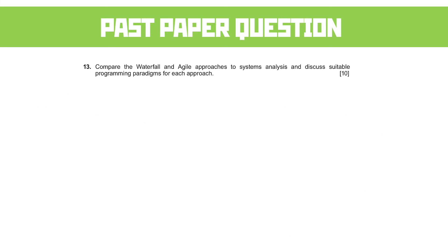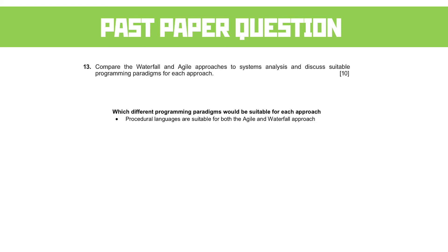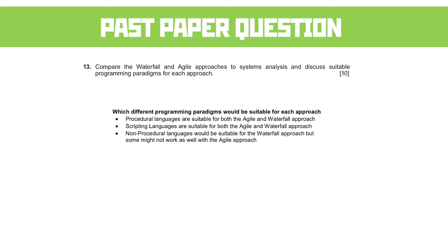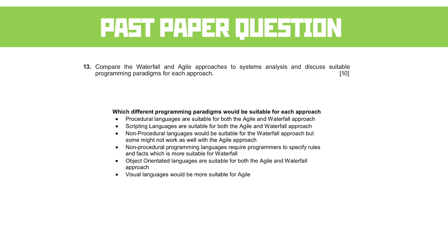What about paradigms? This is content from a different subunit overlapping here. Procedural languages are suitable for both approaches, as are scripting languages and fourth-generation languages. Non-procedural language would be suitable for waterfall but might not work as well with Agile — non-procedural languages work by specifying what you want the end result to be and the system develops its own rules, but in Agile we may not know what that end result needs to be. Object-oriented languages are suitable for both. Visual languages are considered more suitable for Agile. The key takeaway is that non-procedural is the only paradigm you can't really use with Agile.